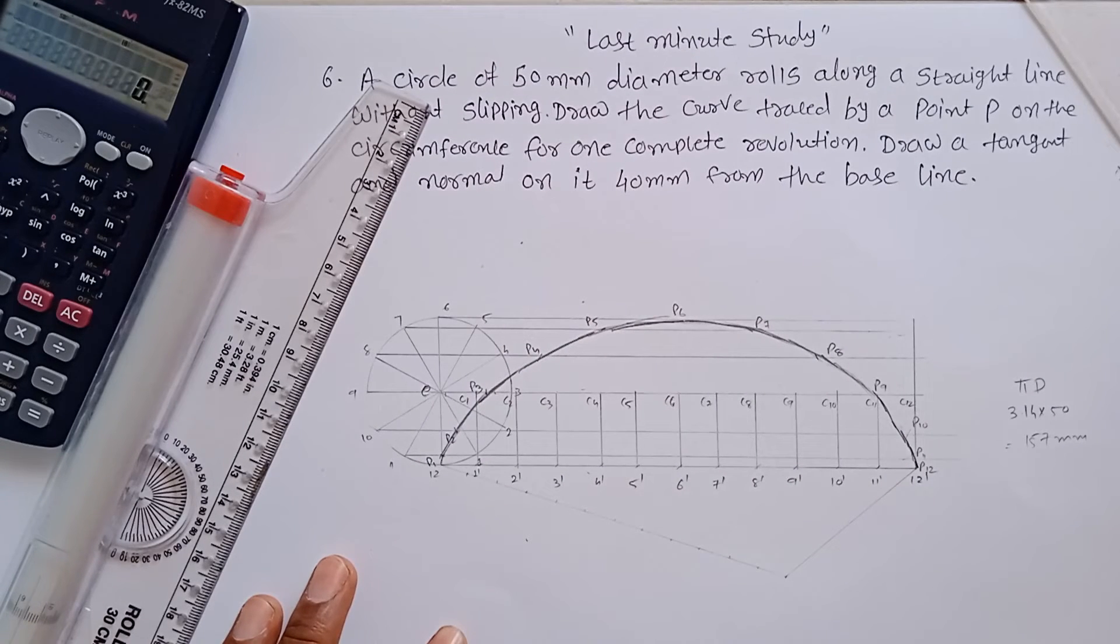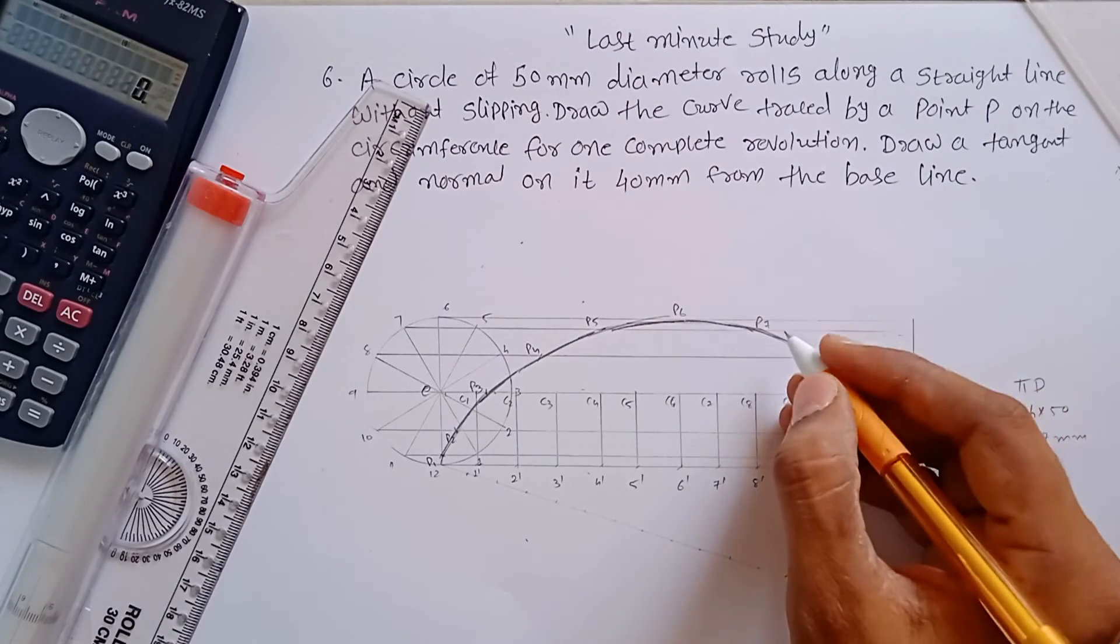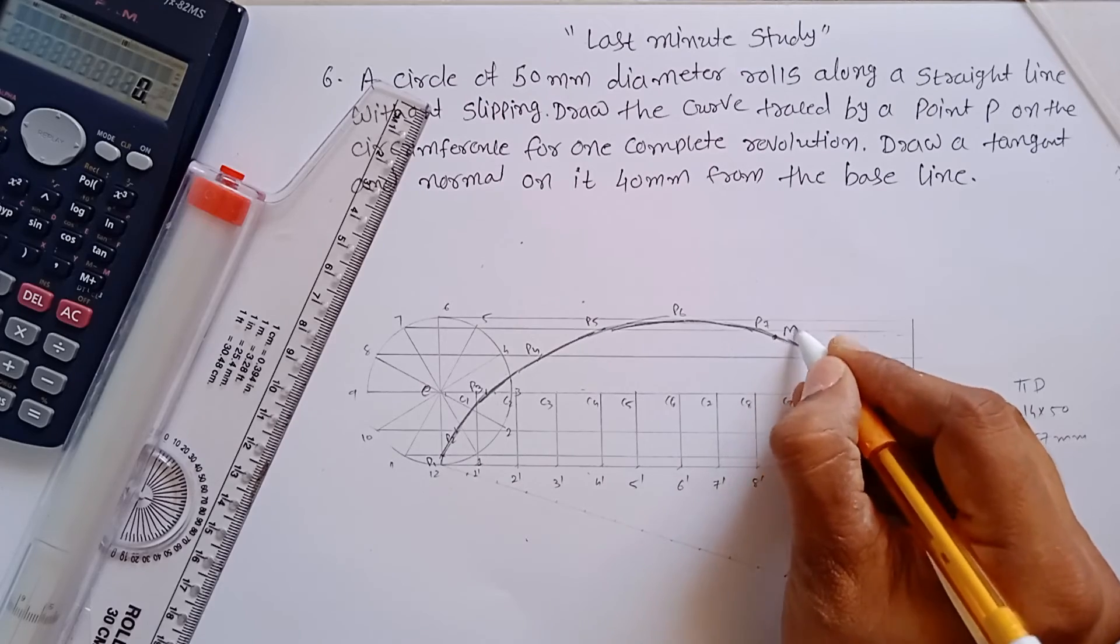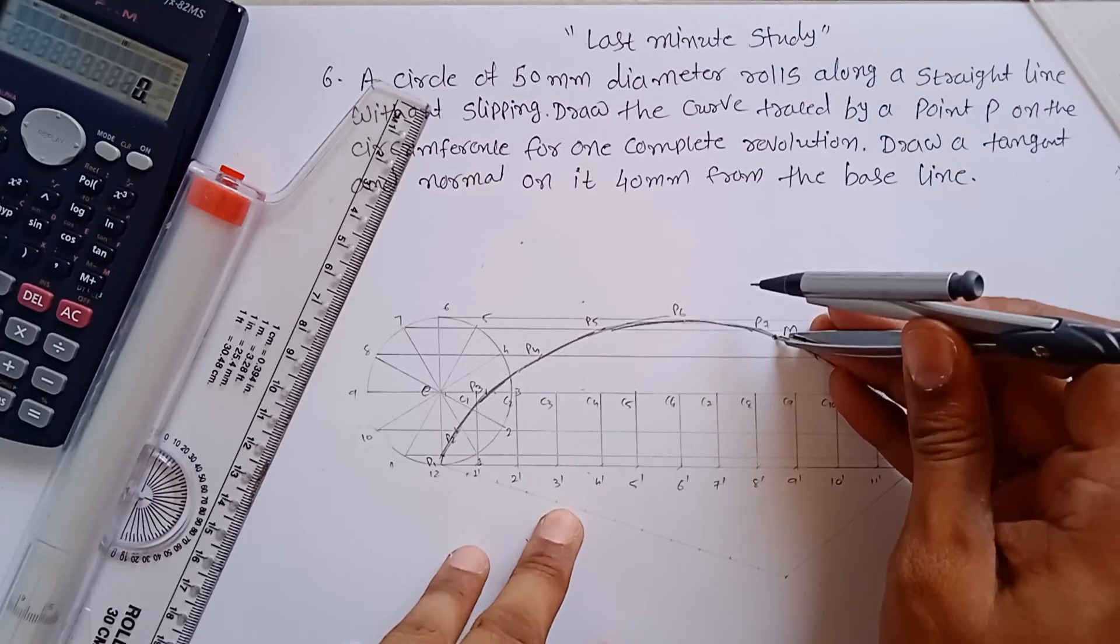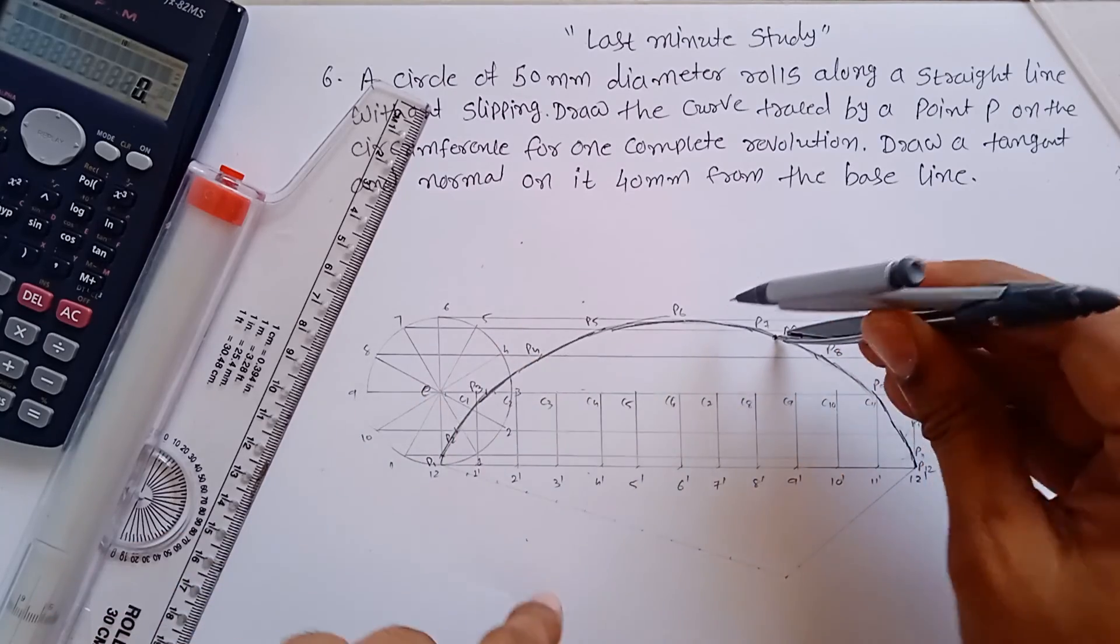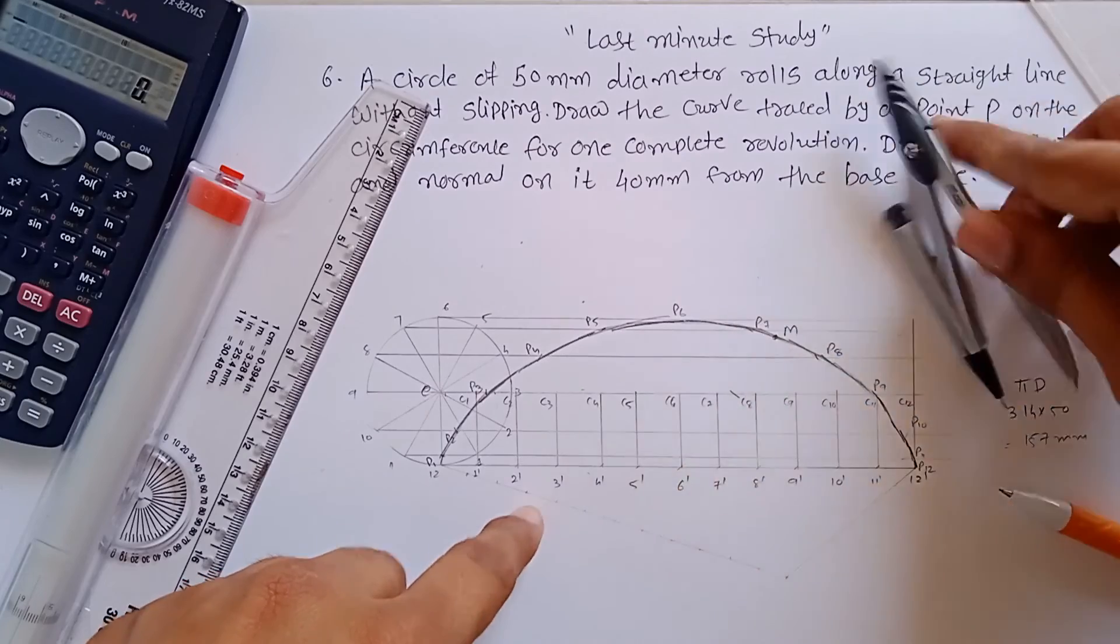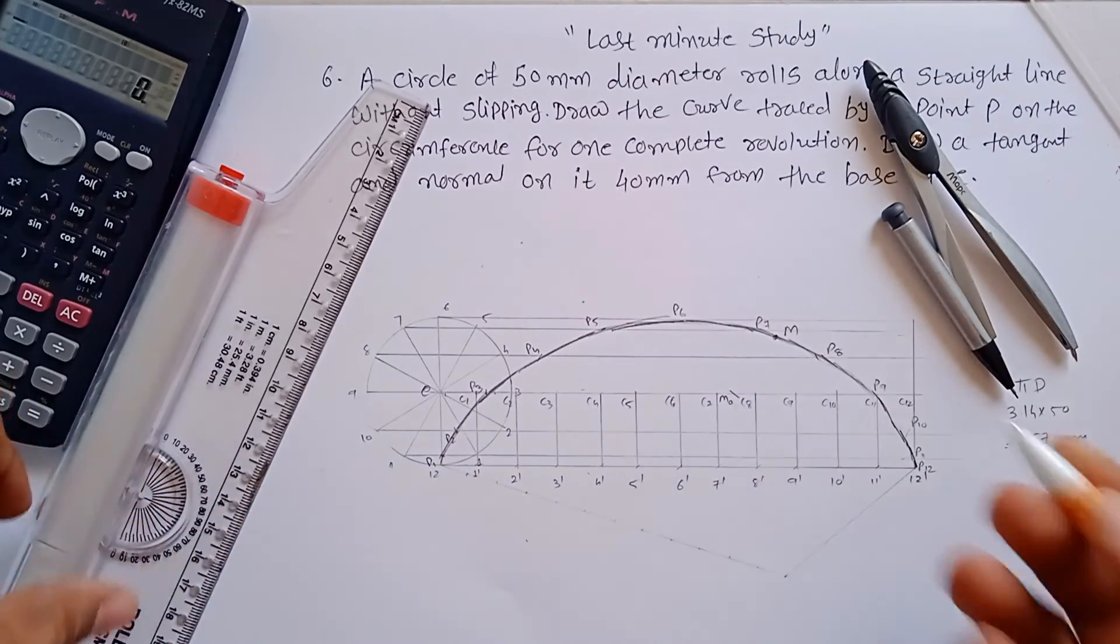Now for normal and tangent, mark a point M anywhere on the curve, so this point is M. Circle radius as a distance, and M as a center, make an arc on this center line. This point is MO, let's say.